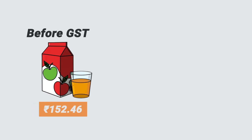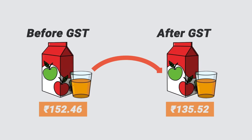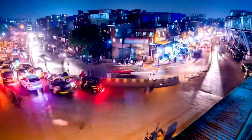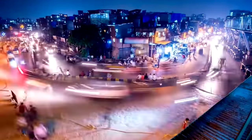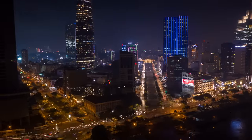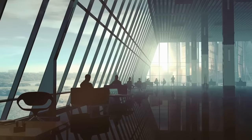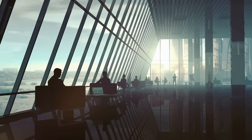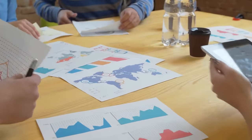The cost of the same juice packet came down drastically from 152.46 rupees to 135.52 rupees. And as discussed in our India-China video, this reduction in tax burden makes the Indian market extremely competitive — especially with the rise of Asian economies like Vietnam, Malaysia, and Bangladesh, we cannot afford to scare away foreign companies because of our tax burden. Thirdly, input tax credit helps businesses pay less tax. The calculation has already become very messy, so let me quickly explain input tax credit with another simple example.